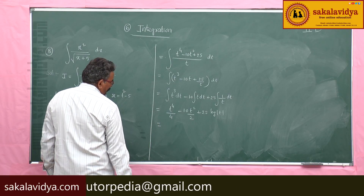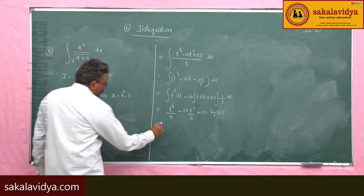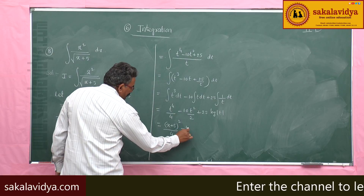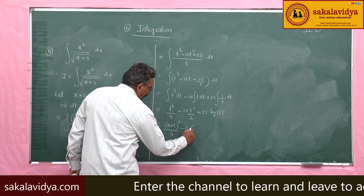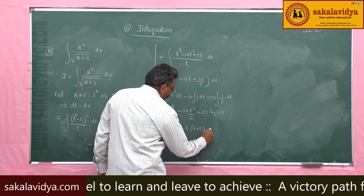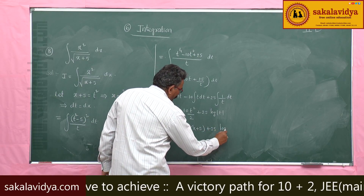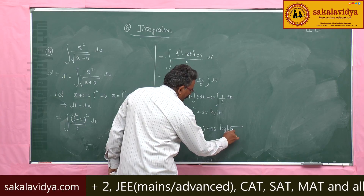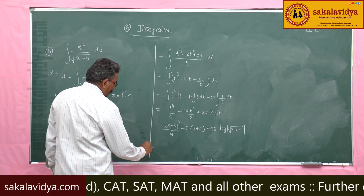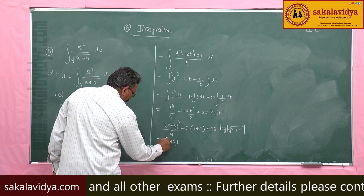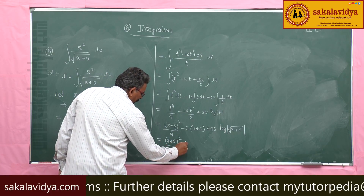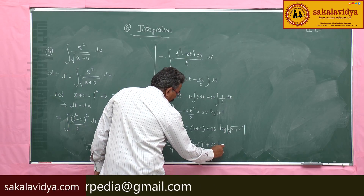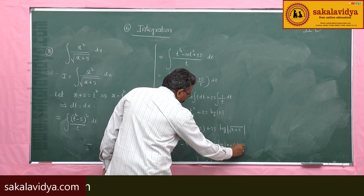Now back-substituting t² = x + φ: t⁴/4 becomes (x + φ)²/4, the middle term becomes φ(x + φ), and log|t| becomes log|√(x + φ)|. The final answer is (x + φ)²/4 − φ(x + φ) + (φ²/2) · log|x + φ| + C.